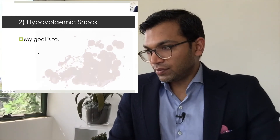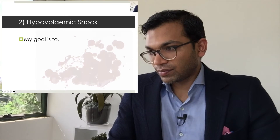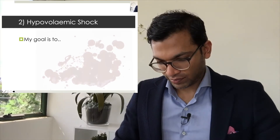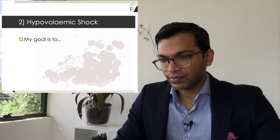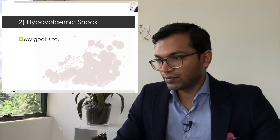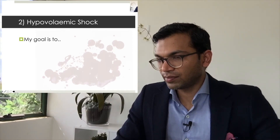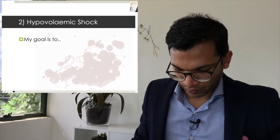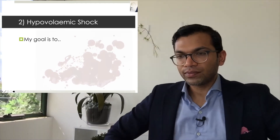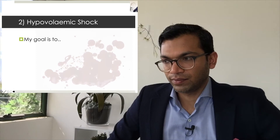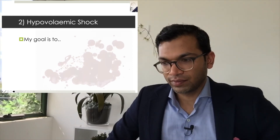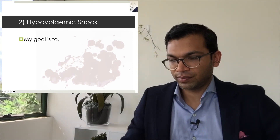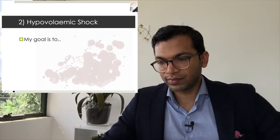I would make all reasonable attempts to adequately resuscitate this patient to a systolic BP of around 90. My goals would be to maintain sympathetic tone and minimize drugs that reduce contractility and afterload. To this end I would choose ketamine 1 mg/kg IV and rocuronium 1 mg/kg.